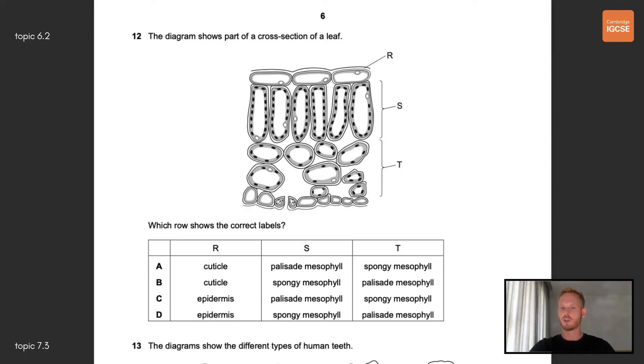Question 12, the diagram shows part of a cross section of a leaf. Which row shows the correct labels? R is the cuticle, a waxy layer that provides some protection and limits water loss to evaporation. S is the palisade mesophyll tissue. Palisade mesophyll cells are densely packed with chloroplasts for photosynthesis. Finally T is the spongy mesophyll. The cells are loosely packed creating air spaces for the exchange of gases. The correct answer is therefore row A.